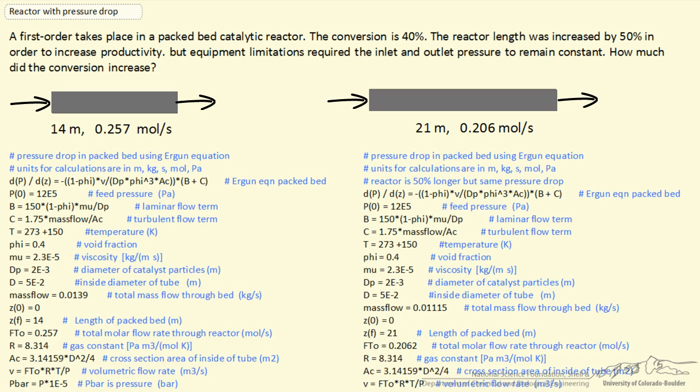In this example I'm going to look at a packed bed catalytic reactor in which the conversion is 40%. We want to make the reactor 50% bigger, namely increase the size to 1.5 times the original size in order to increase productivity.